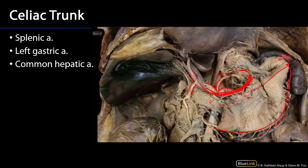There is a bifurcation into the left and right hepatic branches, and typically off one of those or off the hepatic artery proper, a branch to the gallbladder as well. The gastroduodenal artery descends inferiorly and sends off the right gastro-omental artery, which meets up with the left gastro-omental artery creating an anastomosis for the greater curvature of the stomach. The gastro-omental arteries supply the greater curvature, the gastric arteries supply the lesser curvature, and pancreaticoduodenal arteries supply the head of the pancreas and duodenum with blood.